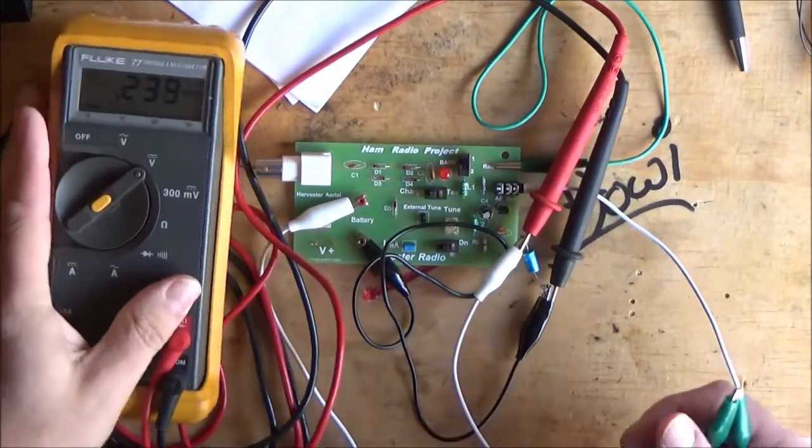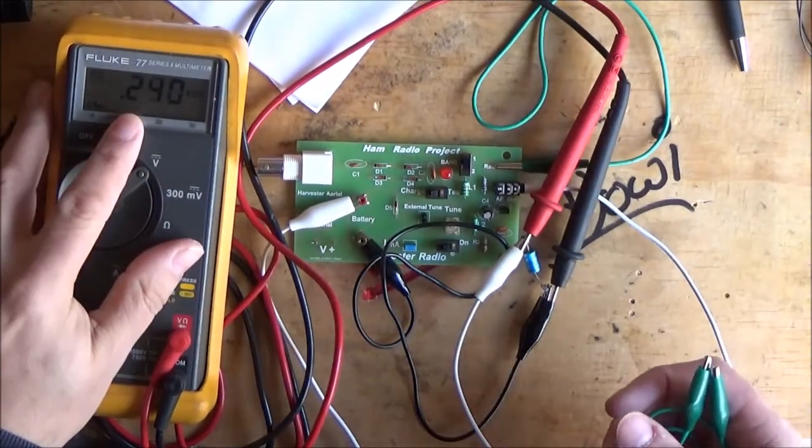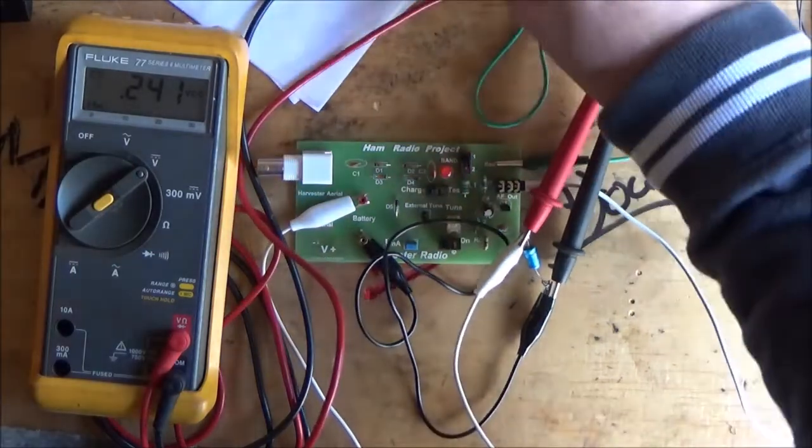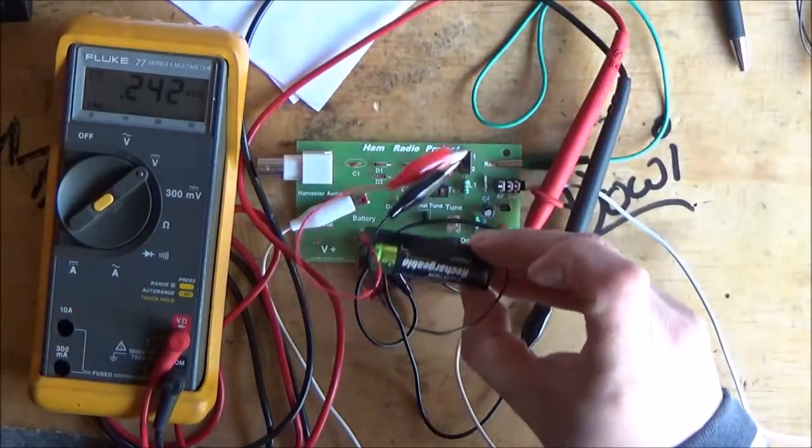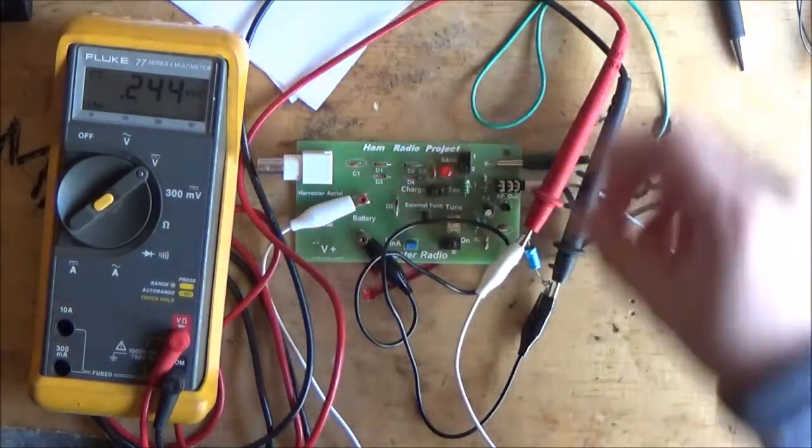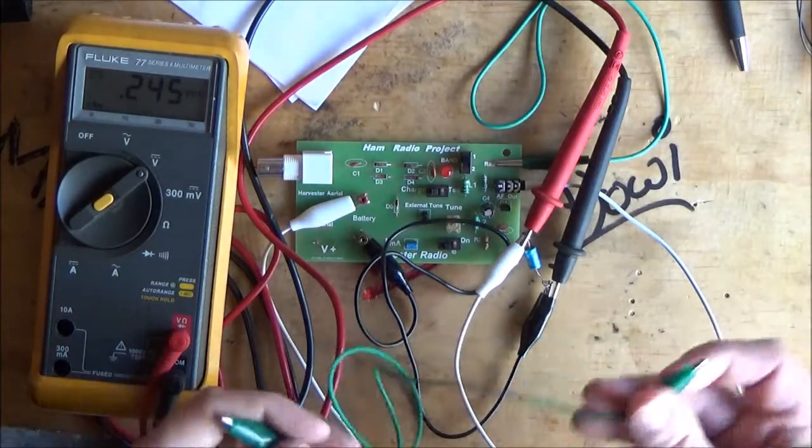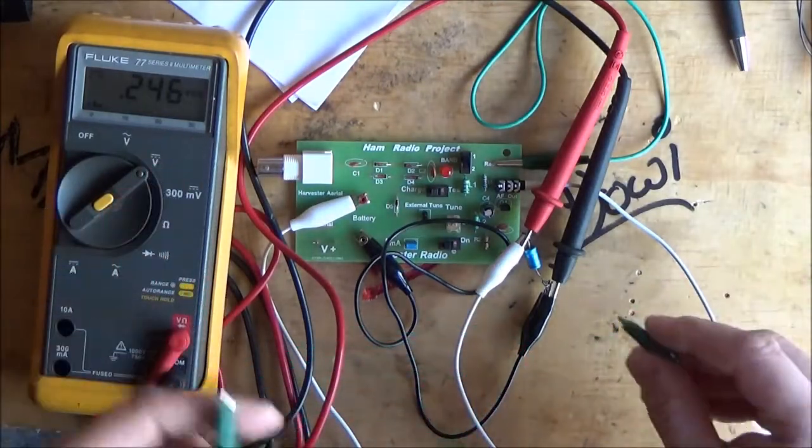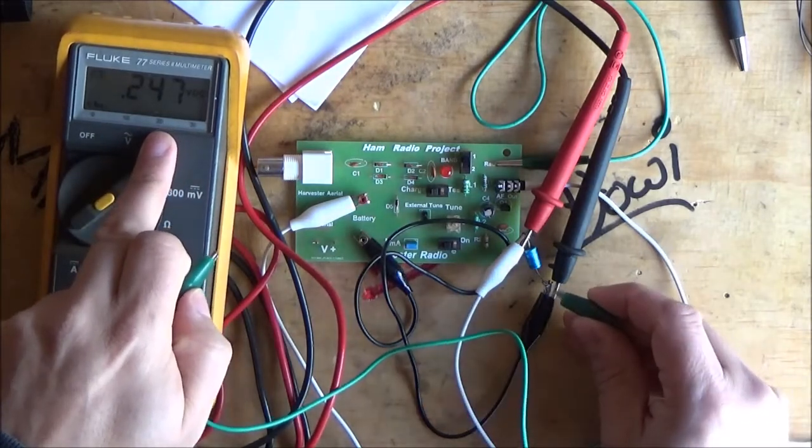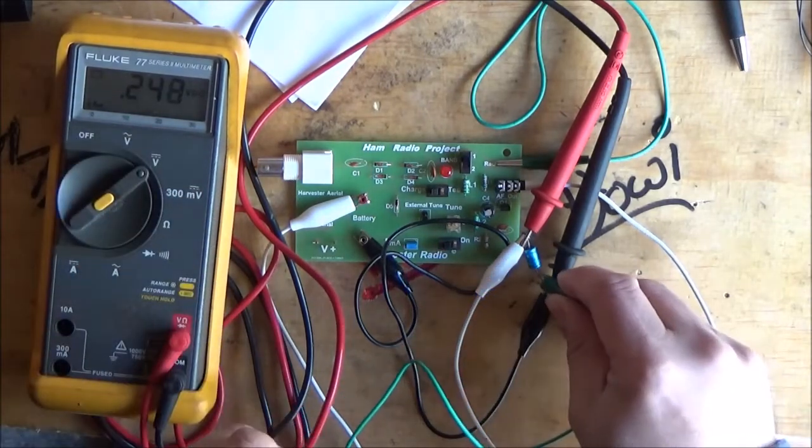So, right now, you can see the fluke meter, we're about 0.24 of a volt. So, this is obviously why we're not going to be able to charge a 1.2 volt cell. Because in my area, the ambient radiation, I think, probably went up to about 0.283, something like that.